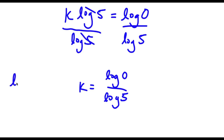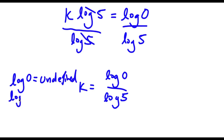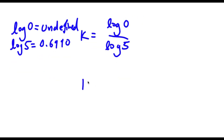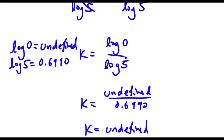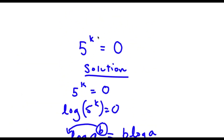Now log 0 is actually undefined, and log 5 equals 0.6990. So k equals undefined over 0.6990. You can't divide undefined by anything because it's simply undefined, so k is just undefined — it has no value. You can't take the log of 0, and also you can't raise any number to a power and get 0. You can get 1 because 5 to the power of 0 equals 1, but 0 is impossible.